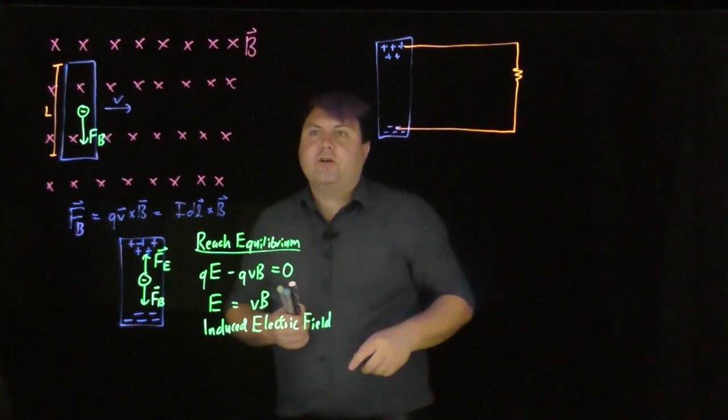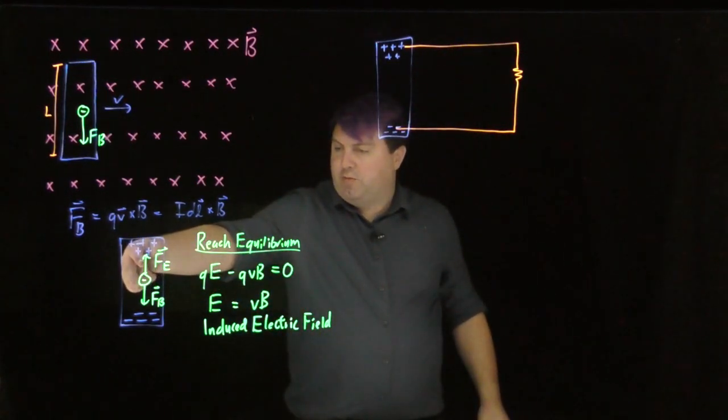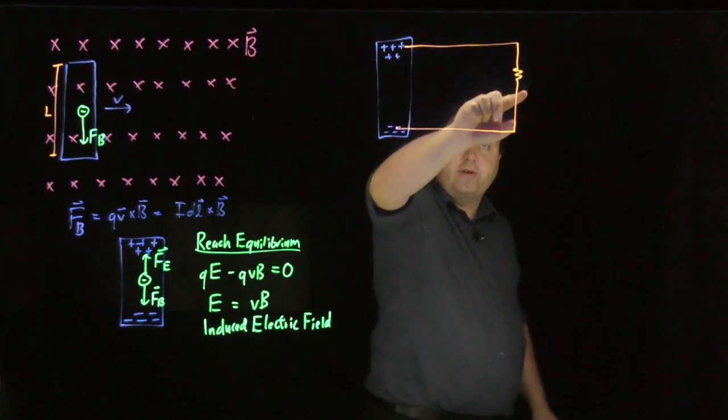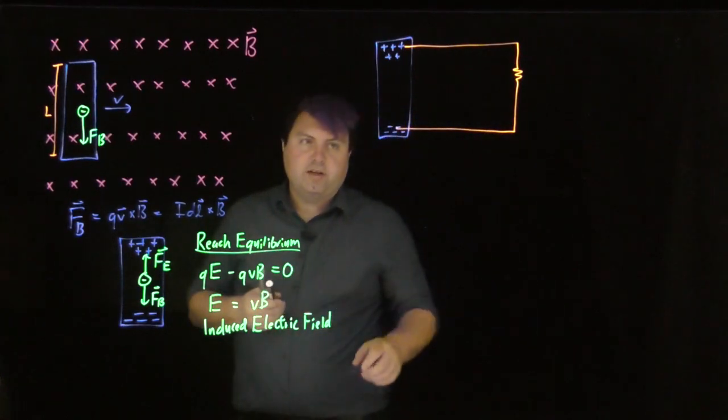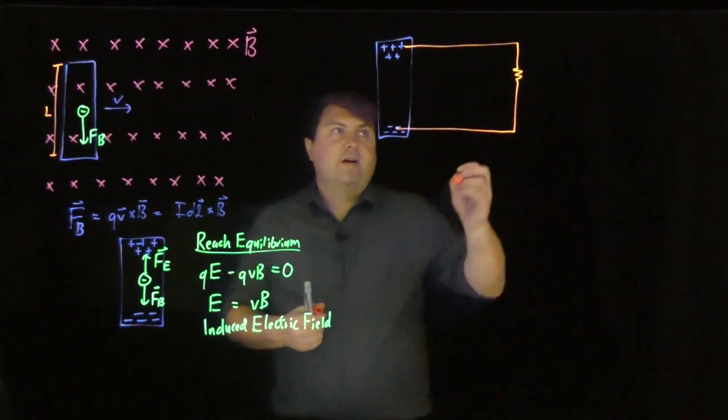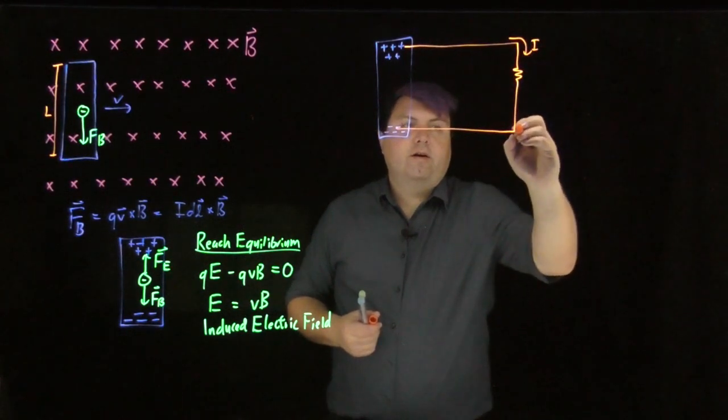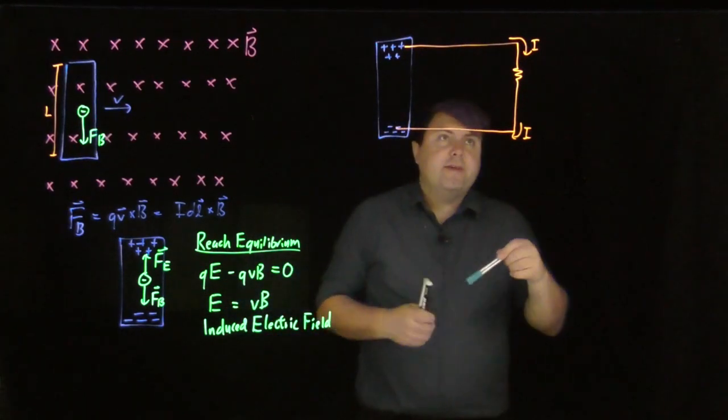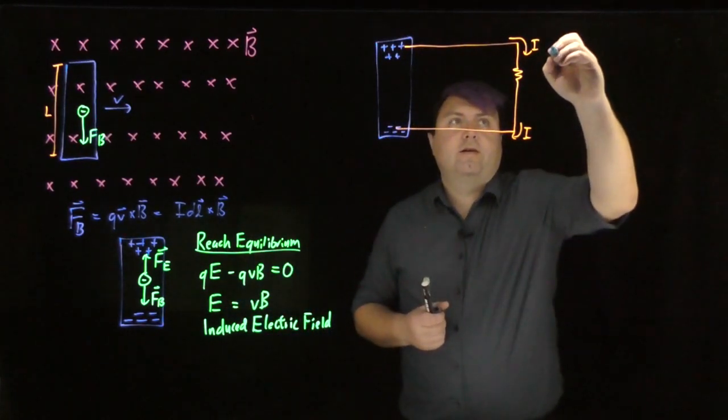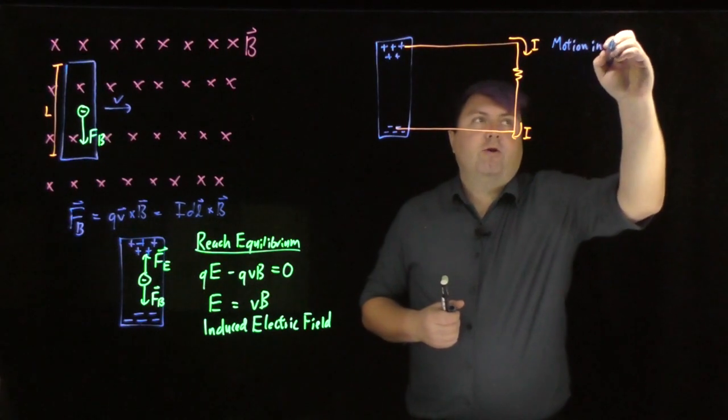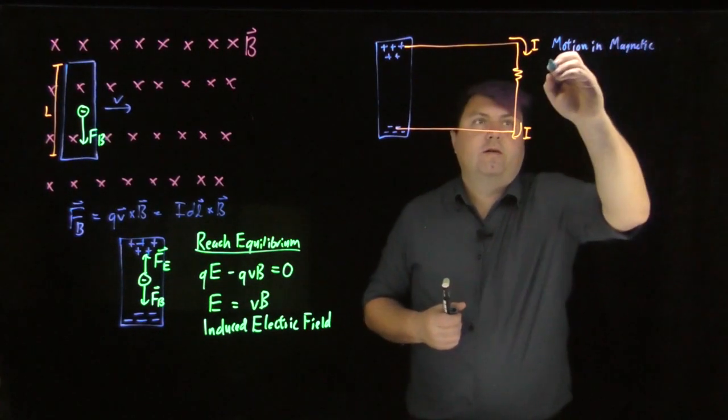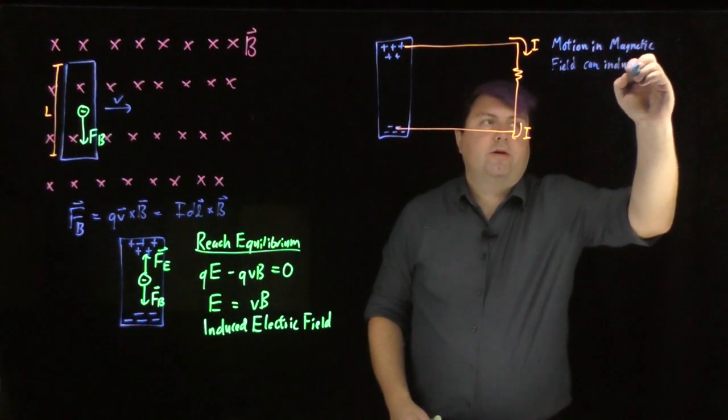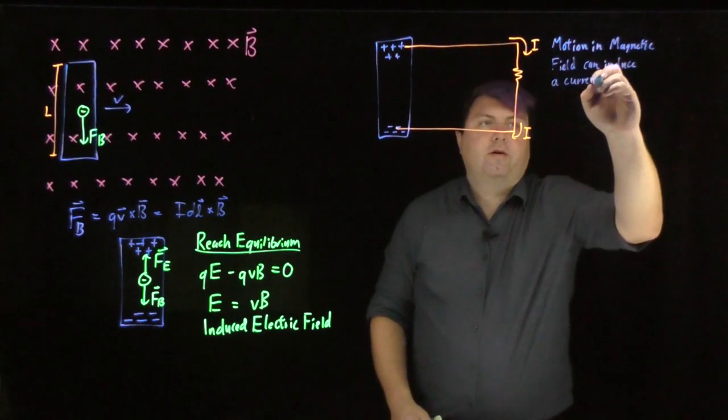And if we do, the electrons inside the conductor are feeling an equilibrium here. But also these positive charges are now attracted and will move along this conductor in a circuit to the negative. So we will have a current. So motion in a magnetic field can induce a current.